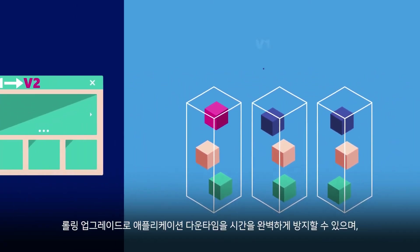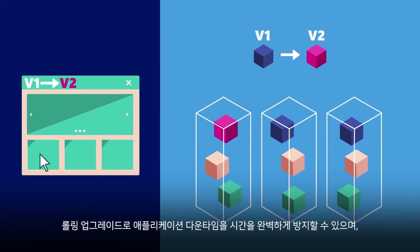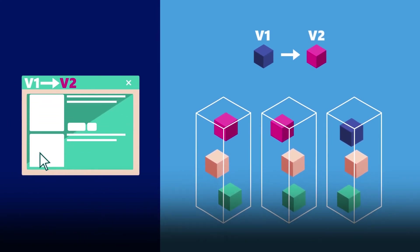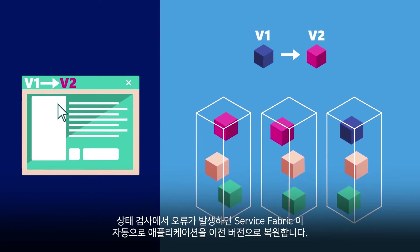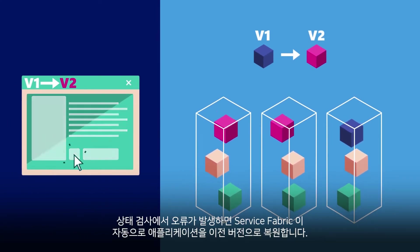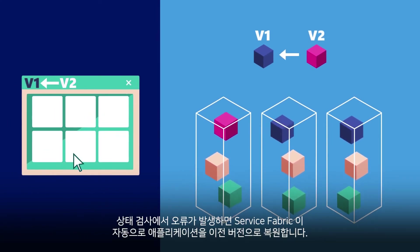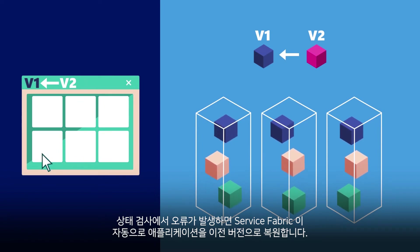Rolling upgrades enable zero application downtime, and if health checks fail, Service Fabric automatically rolls back the application to the previous version.